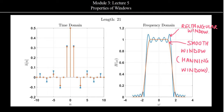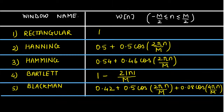Now apart from the Hanning window, we had seen various other windows and their formulas. So let us first revise those formulas. The first window, that is the sudden truncation, is defined by the rectangular window, whose equation is given as w(n) = 1 for all the range of n from minus M/2 to M/2, where M is the order of the filter.